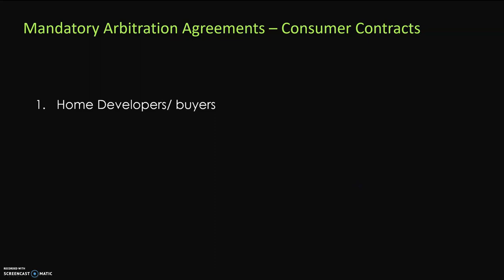A lot of people don't realize that in many of their consumer contracts they are already bound by mandatory arbitration agreements, meaning that if they have a dispute with that provider, they cannot go to court — the only option is to go to an arbitrator. For example, home developers: whether you're buying a house from Mattamy or another developer, in the agreement of purchase and sale there is in 99% of cases an arbitration clause saying that if you have any issues with the developer, you cannot go to court, you must hire an arbitrator and pay the cost. Similarly, if you buy from Amazon and have a dispute, you generally have to go through the arbitral process and hire an arbitrator to have your dispute resolved.